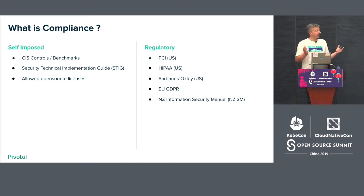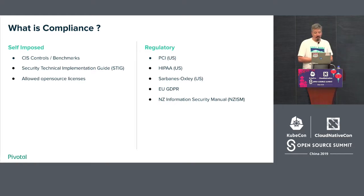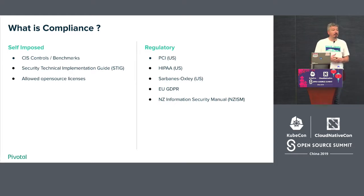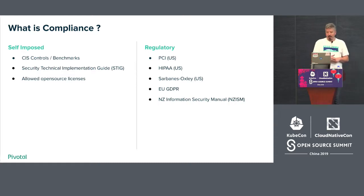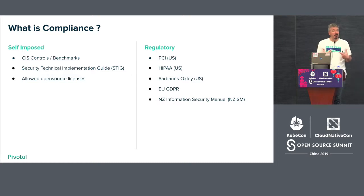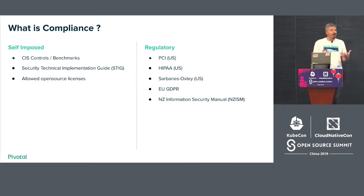PCI is really about companies handling credit cards and people's money — how you store information about their credit cards and personally identifiable information. HIPAA is for the health and medical industry, protecting consumers because there's a lot of sensitive information there. Then you have Sarbanes-Oxley, which is about protecting us from bad actors in large enterprises — a lot of that came out of Enron — protecting consumers from not just accounting errors but actual fraudulent activities.